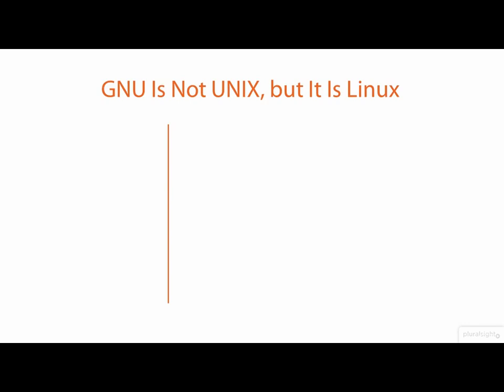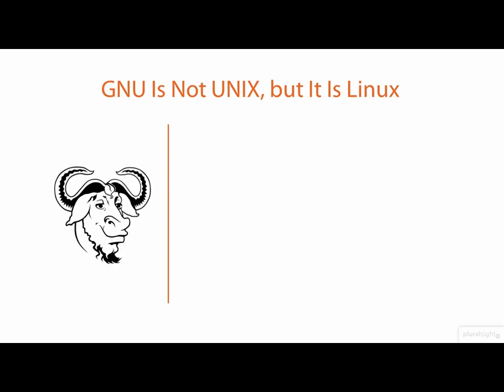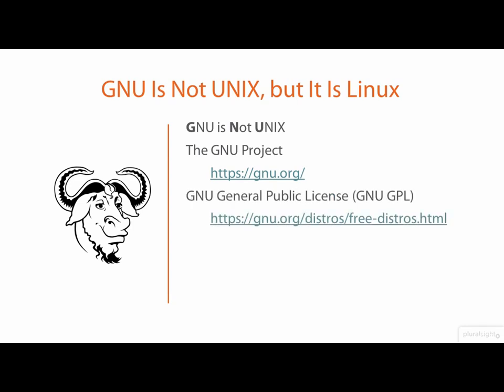Linux uses an operating environment known as GNU, which is a recursive acronym for GNU is not Unix. The GNU project created an emulation of the system and programming tools found on Unix and made them freely usable and distributable by anyone, because of their release under the GNU General Public License, or GNU GPL for short. Thanks to GNU and the GPL, anyone can run their own Unix or Linux computer for free.